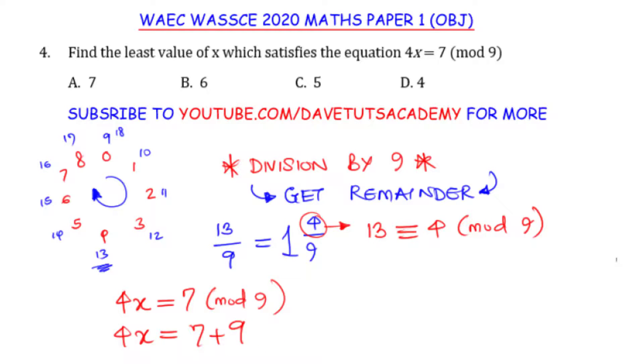So here we are having 4x equals 7 plus 9. That means that we have 4x equals 16. And if we divide both sides by 4, we will see that x equals...